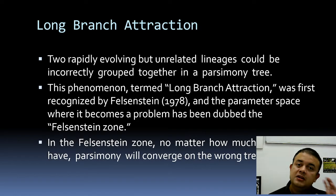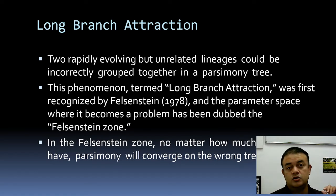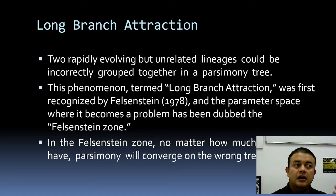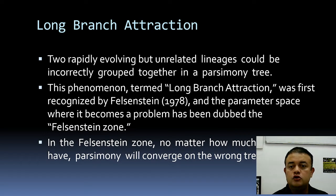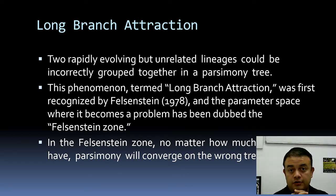The main problem with parsimony, as identified by Felsenstein, is something called long branch attraction. Parsimony works well when all species are highly related. But if two lineages are highly unrelated and rapidly evolving, they tend to cluster together spuriously. This is called long branch attraction.